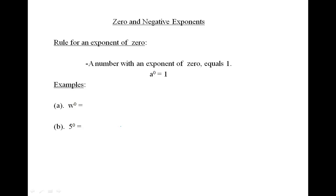Rules for zero and negative exponents. The rule for an exponent of zero is as follows: a number with an exponent of zero equals one. So a to the power of zero equals one. Any number or letter to the power of zero is equal to one.